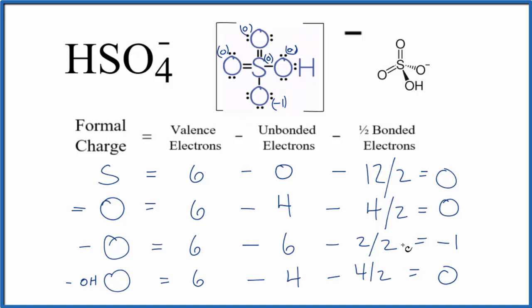Because everything's as close to zero as possible, the formal charges tell us that this is a really good Lewis structure for HSO4 minus—very favorable, more likely Lewis structure.